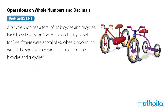A bicycle shop has a total of 37 bicycles and tricycles. Each bicycle sells for $189, while each tricycle sells for $99. If there were a total of 90 wheels, how much would the shopkeeper earn if he sold all the bicycles and tricycles?